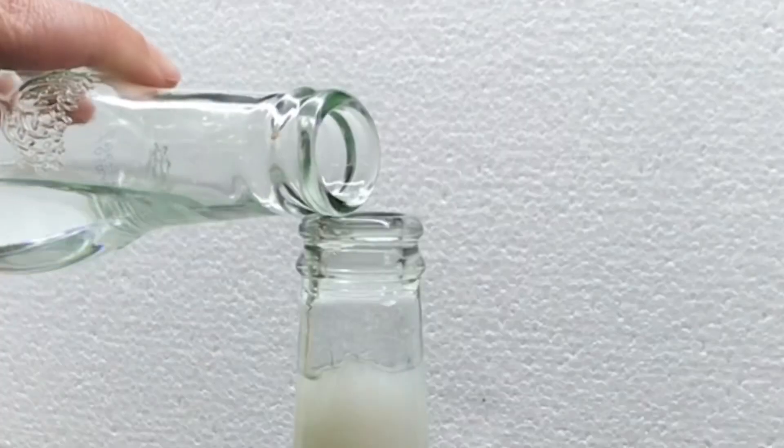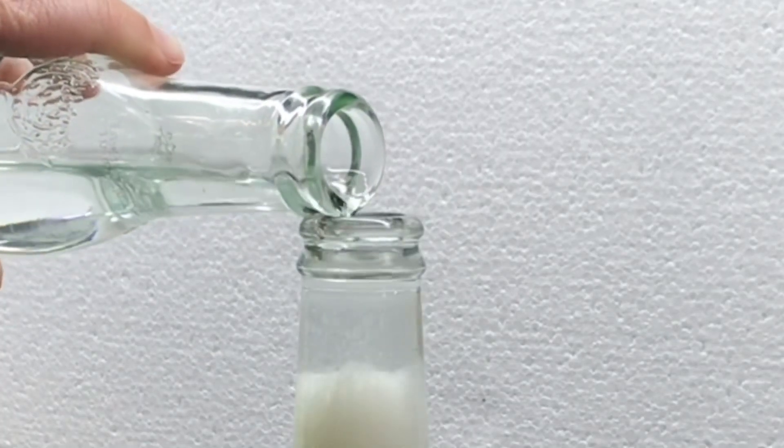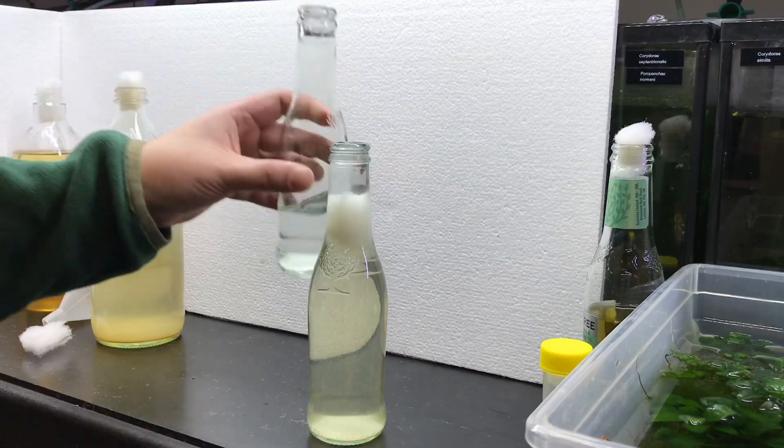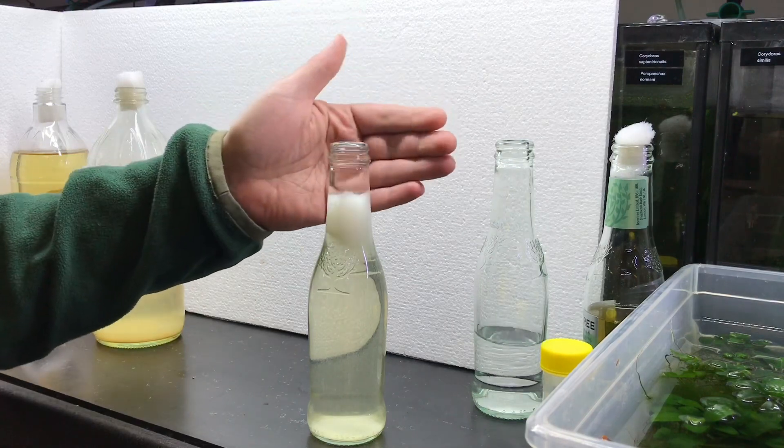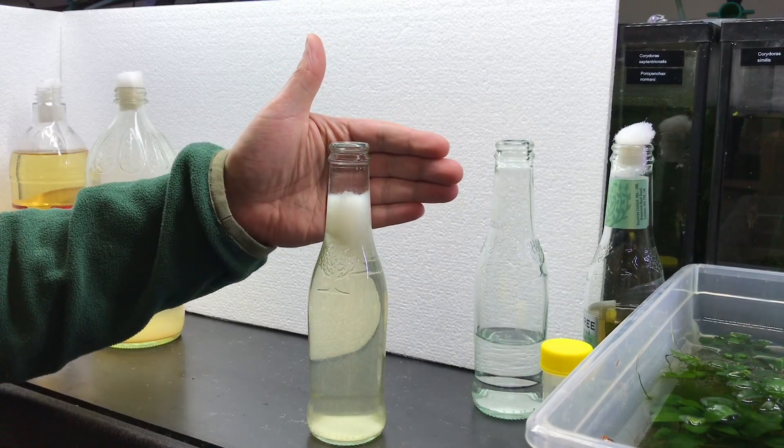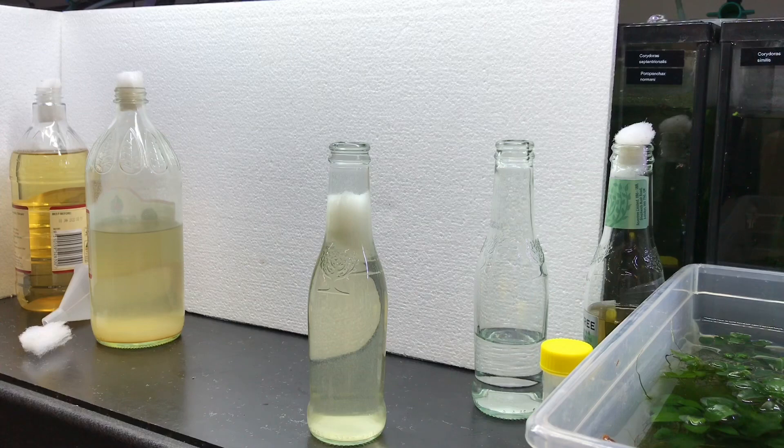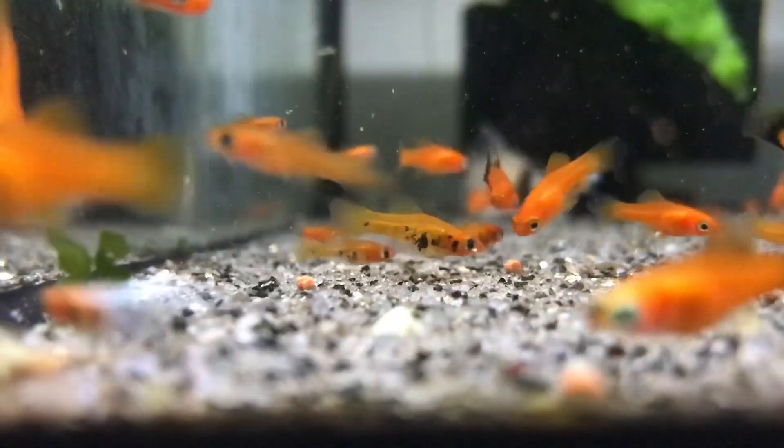All our other fish do get microworms, vinegar eels, and baby brine shrimp. A great little live food, easy to culture, and makes fry raising easy. Hope you enjoyed watching this video by Kilio Cory's Fishroom.